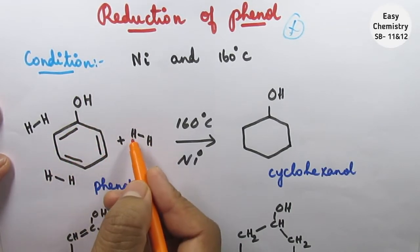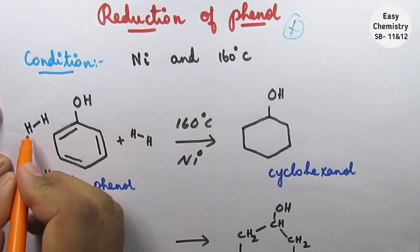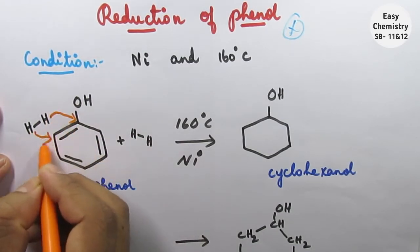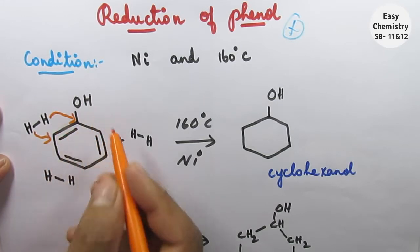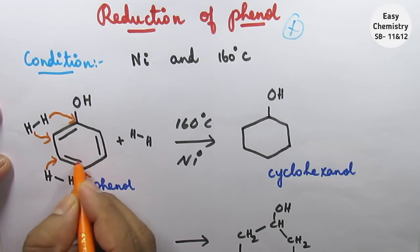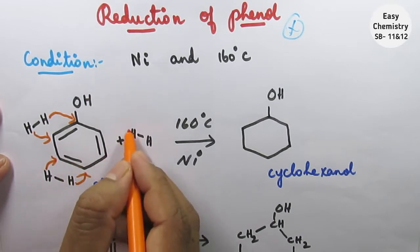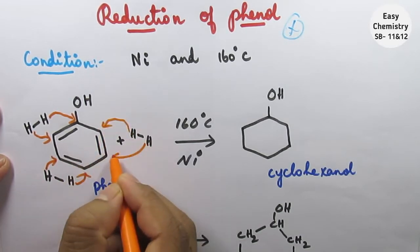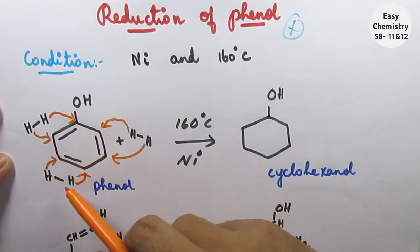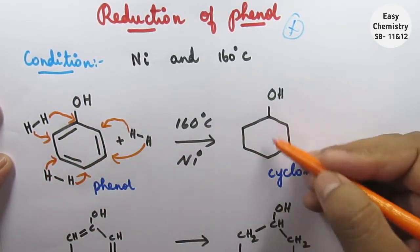We are going to add hydrogen, H2. We add one hydrogen and one hydrogen at each double bond. The double bond then becomes a single bond. So everything becomes a single bond, and we get this hexagonal shape.